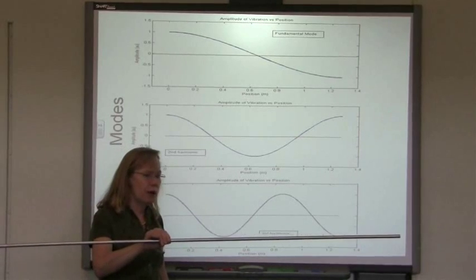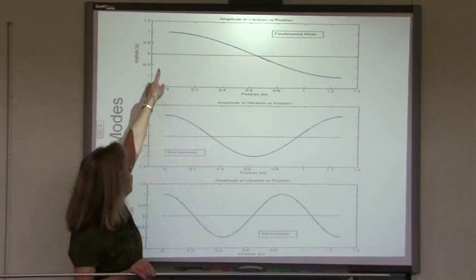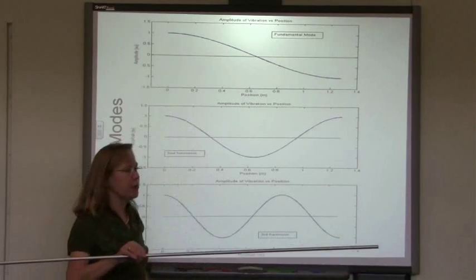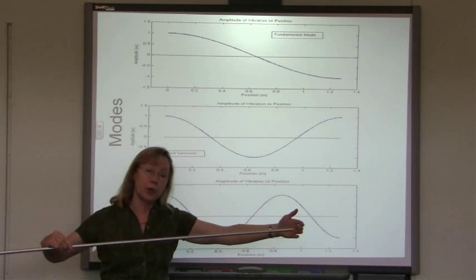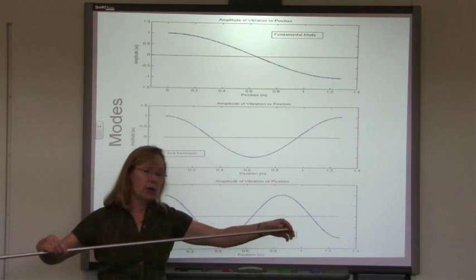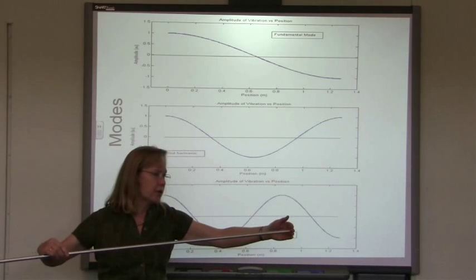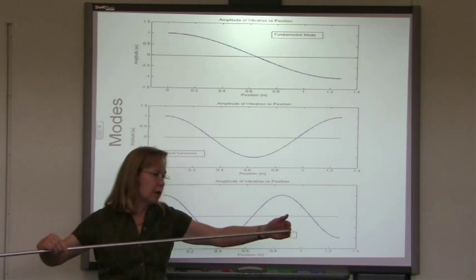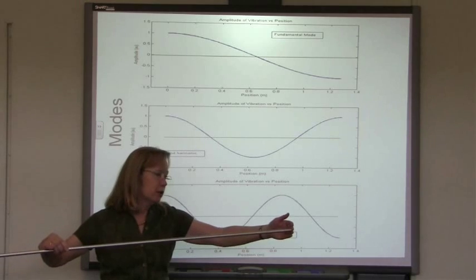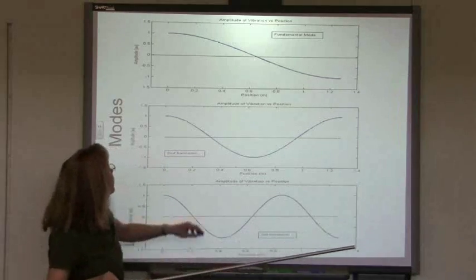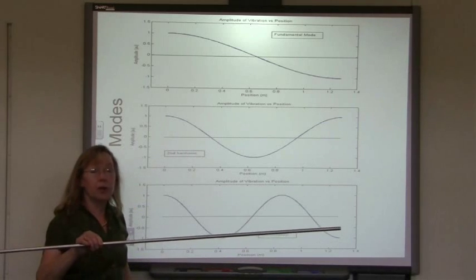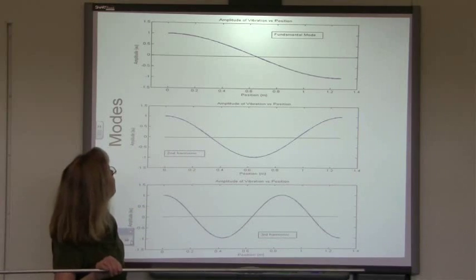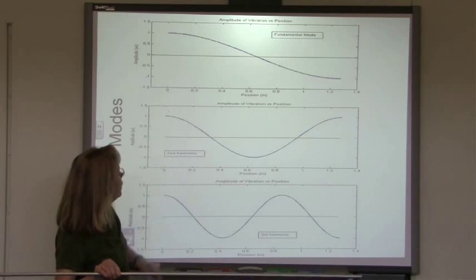And the reason we have half a wavelength and the reason why you have a maximum at the ends is because at the end, this rod is just pushing against air. And so there's nothing really to push against. We call this a free boundary condition. And for a free boundary condition, we have to have zero force which corresponds to a zero slope at the end. So that's the fundamental mode.